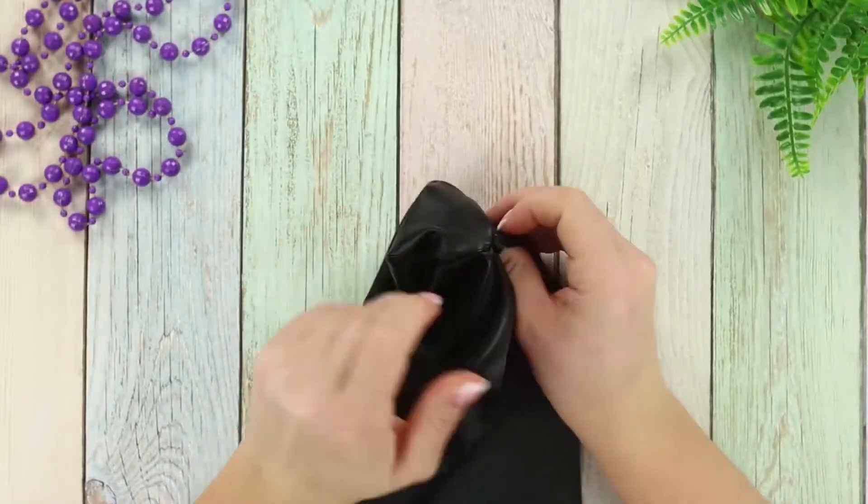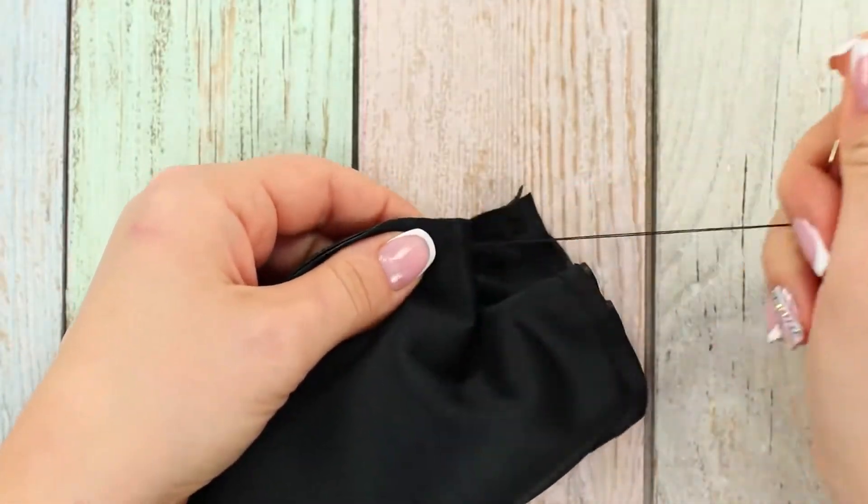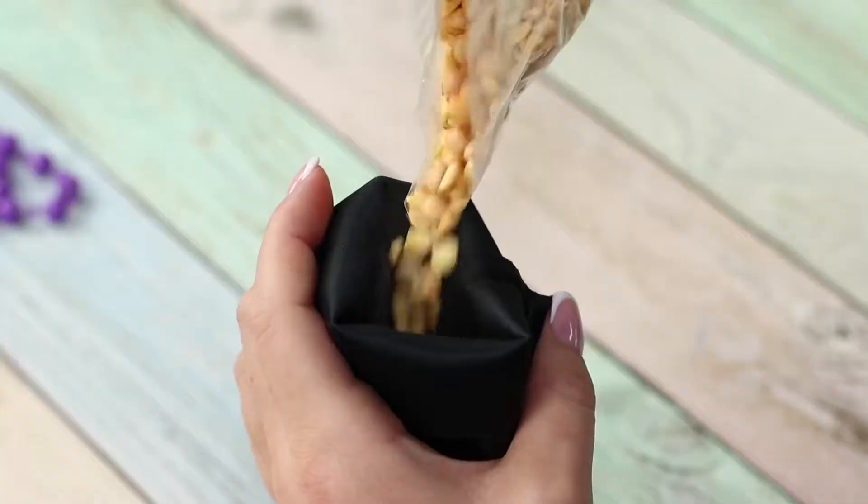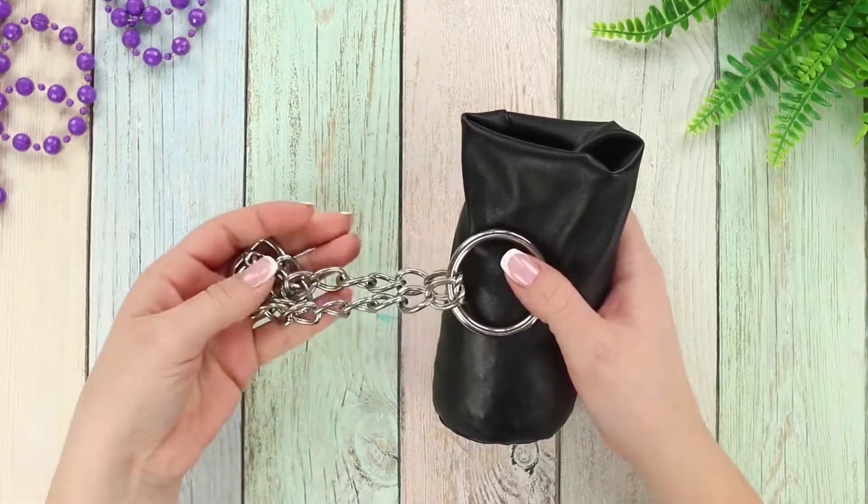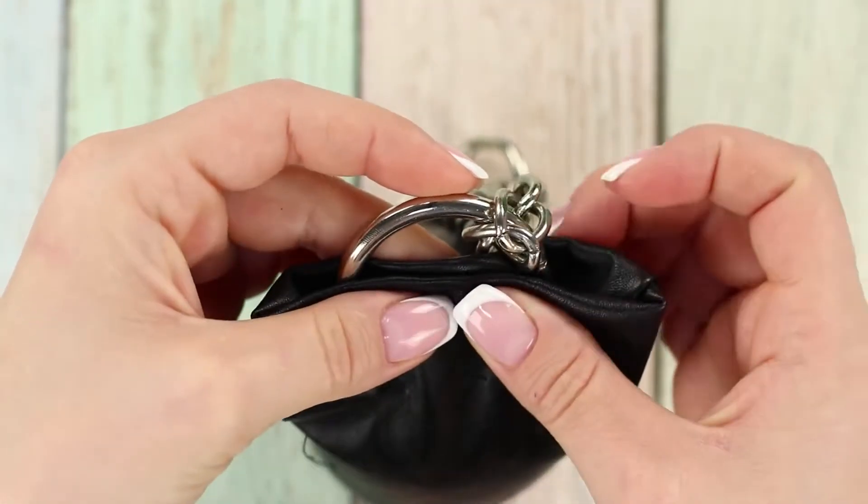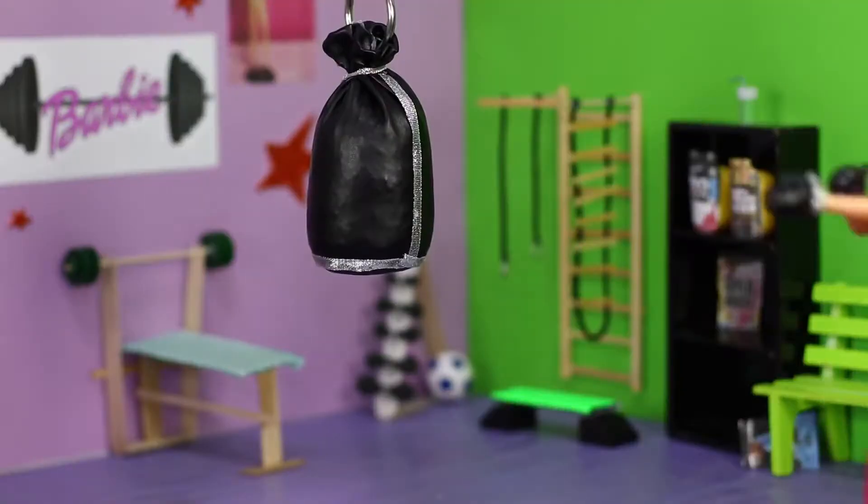Turn it inside out. Sew the edges and pour dried peas in the cylinder. Take a chain and glue it to the folds of the fabric. Decorate it with silver ribbons and suspend the punching bag in the gym.